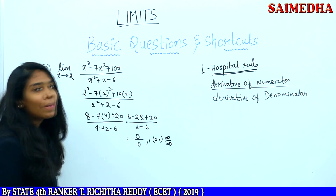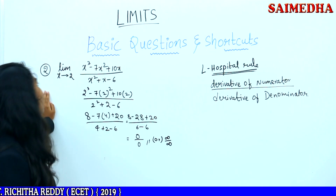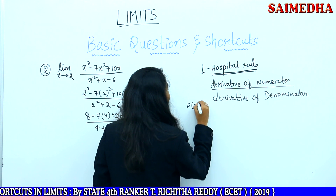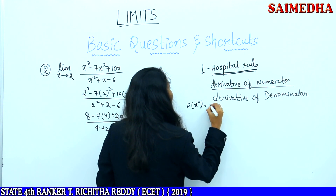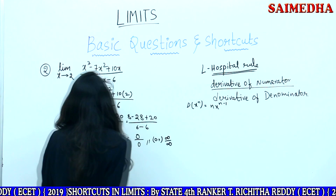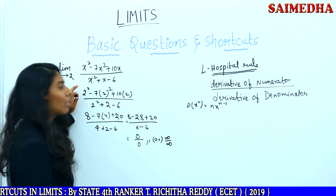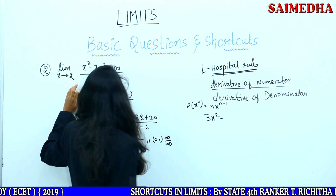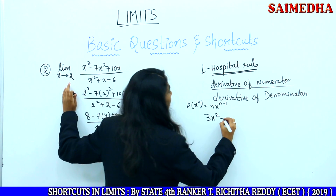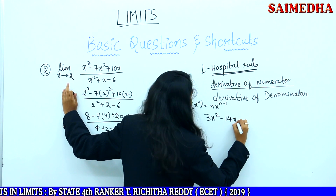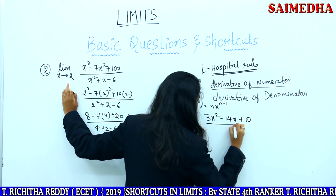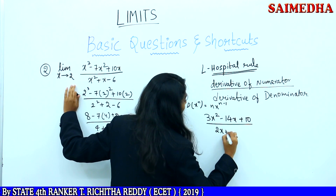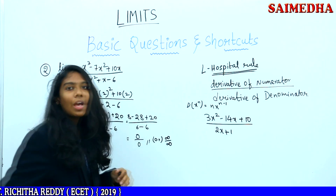Now apply L'Hôpital's rule to this problem. What is the derivative of x cubed? Generally, derivative of x power n equals nx power n minus 1. So, derivative of x cubed equals 3x squared, minus derivative of 7x squared equals 14x, plus derivative of 10x equals 10. Derivative of x squared equals 2x, plus derivative of x equals 1.